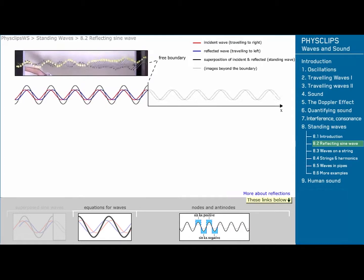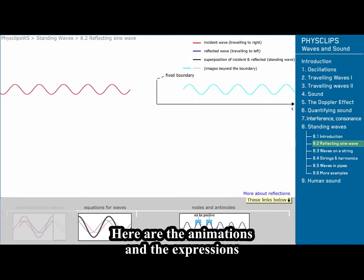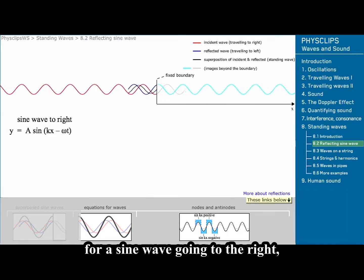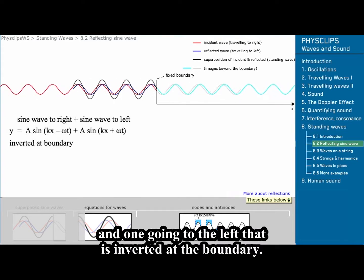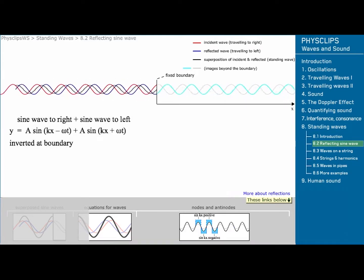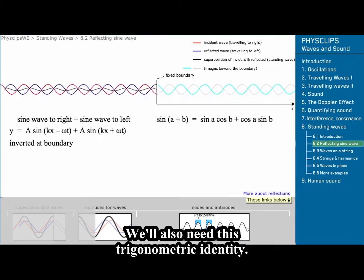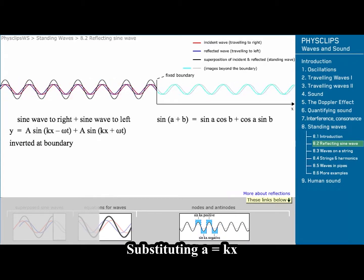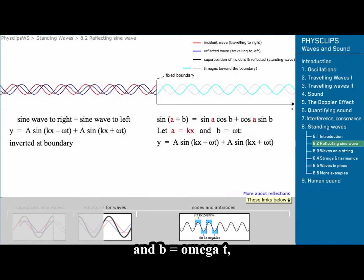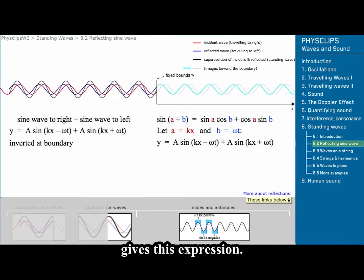Let's do the maths. Here are the animations and the expressions for a sine wave going to the right, and one going to the left that is inverted at the boundary. We'll also need this trigonometric identity. Substituting a equals kx and b equals omega t gives this expression.